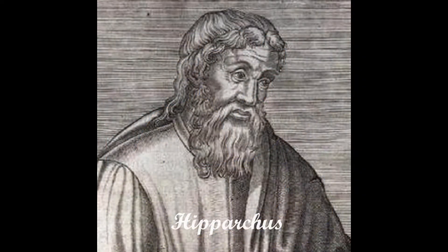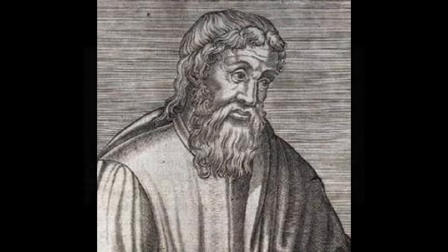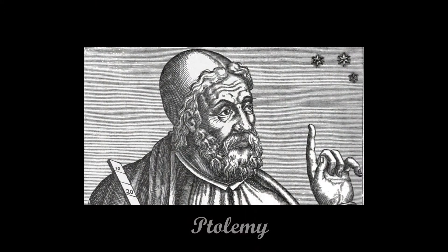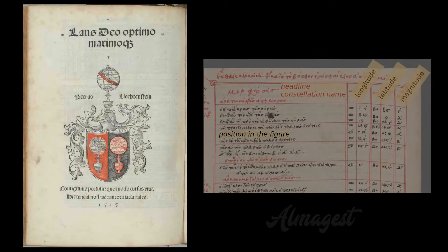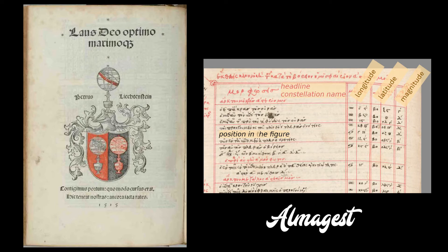The first such known catalogue was made by Greek astronomer Hipparchus in about 160 BC to 130 BC. Then after 300 years, Ptolemy added a few more stars to that catalogue and published it in his work Almagest in about 150 AD.